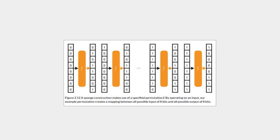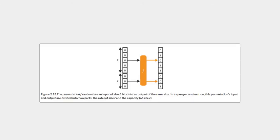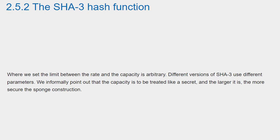In the next few pages, an 8-bit permutation is used to illustrate how the sponge construction works. You can imagine that Figure 2.12 is a good illustration of the mapping created by this permutation on all possible 8-bit inputs — for example, 000 is a triangle, 100 is a square, and so on. To use a permutation in our sponge construction, we also need to define an arbitrary division of the input and output into a rate and a capacity, as Figure 2.13 illustrates. The capacity is to be treated like a secret, and the larger it is, the more secure the sponge construction.